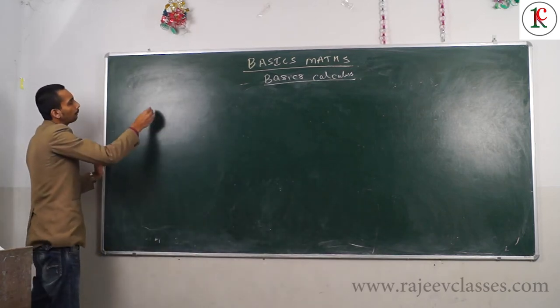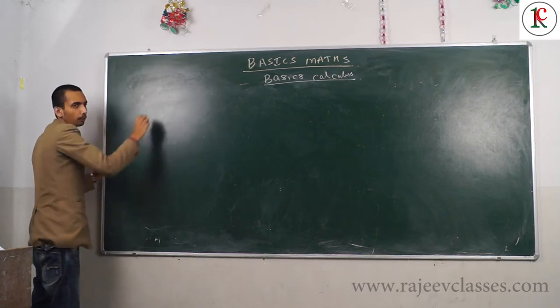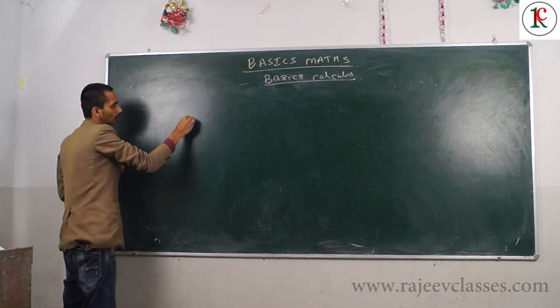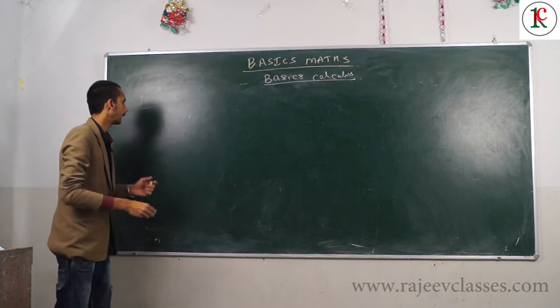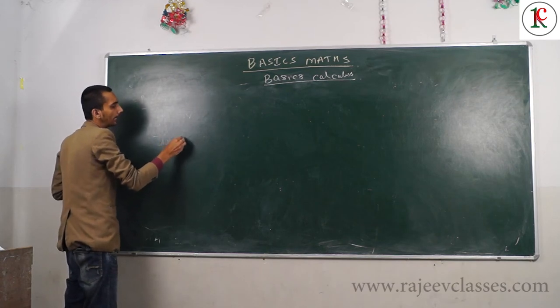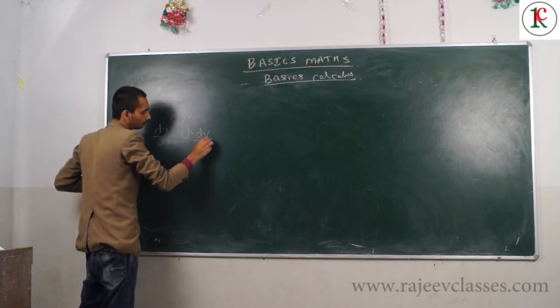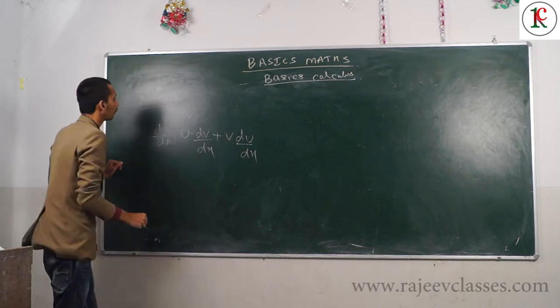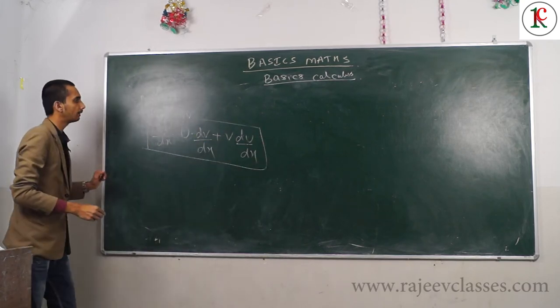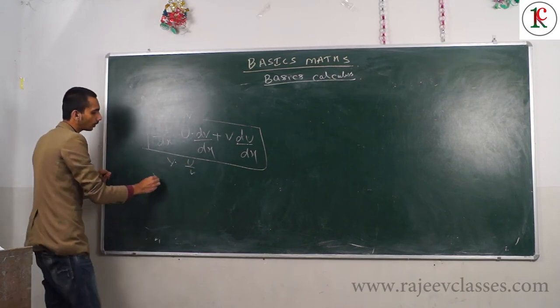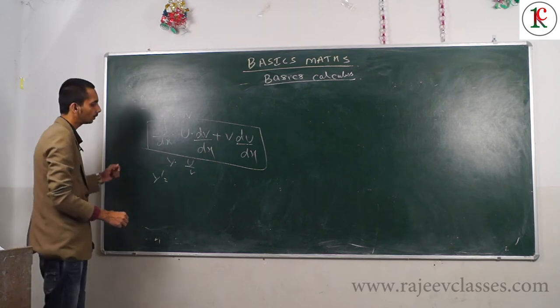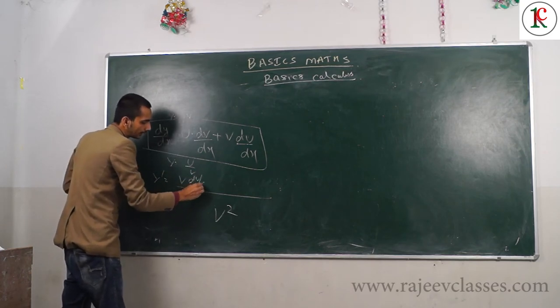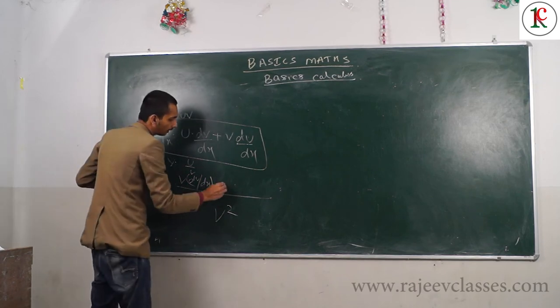For product rule: if Y equals U times V, where U and V are functions, then DY/DX equals U times (differentiation of V) plus V times (differentiation of U). For division rule: if Y equals U by V, then differentiation is (V times dU/dX minus U times dV/dX) divided by V squared.